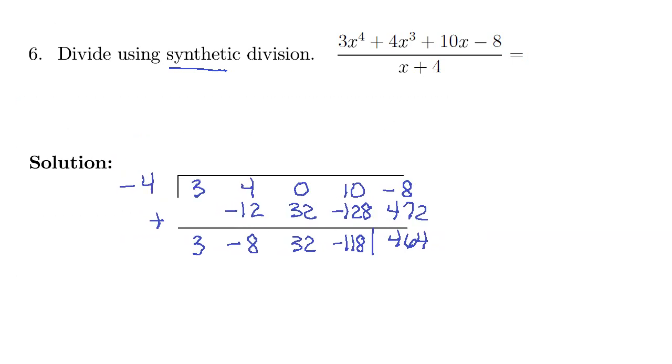So our quotient here, this is going to be the numerical term, the x term, the x squared term, and the x cubed term. So our quotient is going to be 3x cubed minus 8x squared plus 32x and